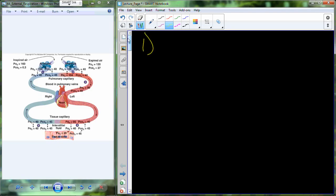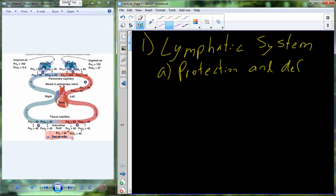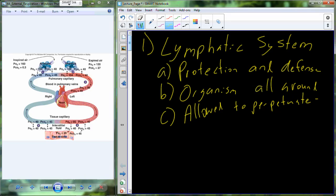If you want to start a new section of notes, you can call it the lymphatic system. The lymphatic system is dedicated to protection and defense of the organism. Why do we need protection and defense? Because death is lingering around every corner. There are organisms all around you. If many of these organisms are allowed to perpetuate in a human body, this leads towards disease and then organism failure.